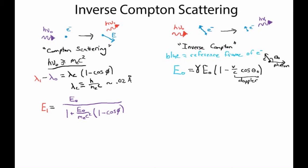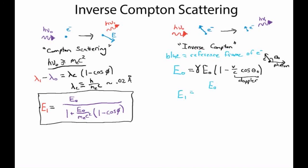Once we've boosted into the electron's frame, we can repeat the entire derivation we did for Compton scattering and we end up with this answer relating the perceived output energy of the photon to the perceived input energy in the electron's reference frame. The energy of the outgoing photon E1 is related to E0 by E0 over 1 plus the energy of the incoming photon in the electron's frame over the rest energy of the electron, times the angle dependence 1 minus cosine phi (blue), where phi is measured in the electron's reference frame.